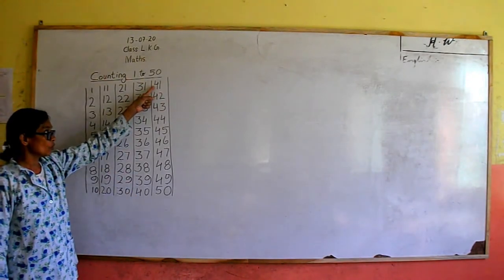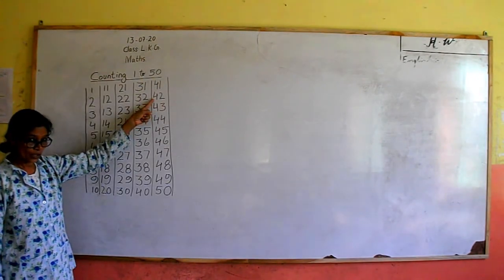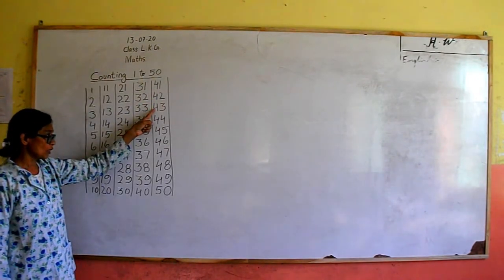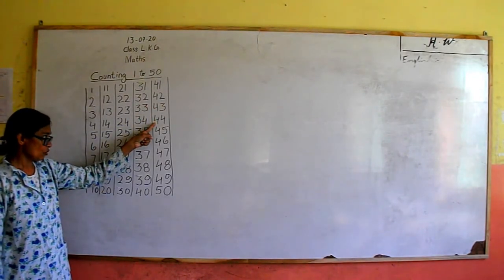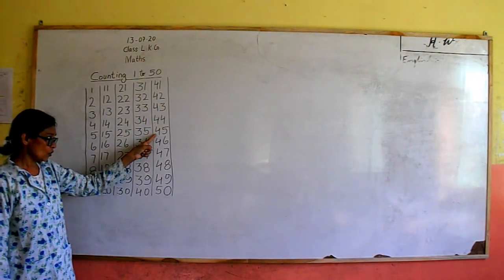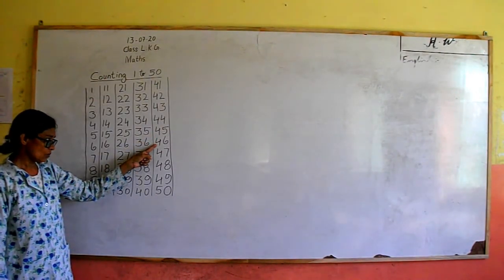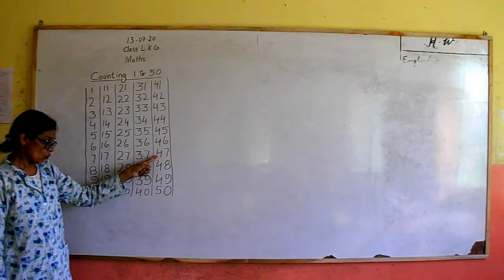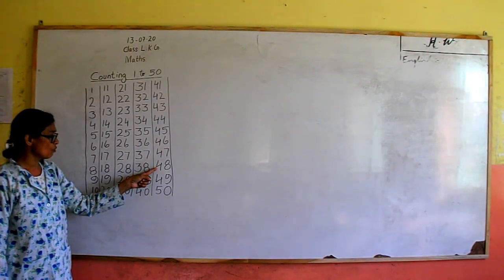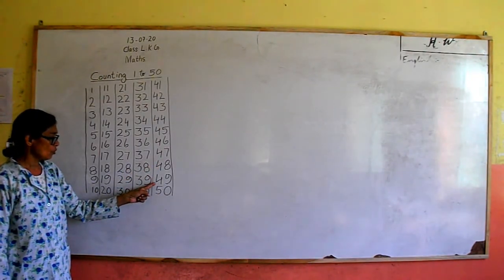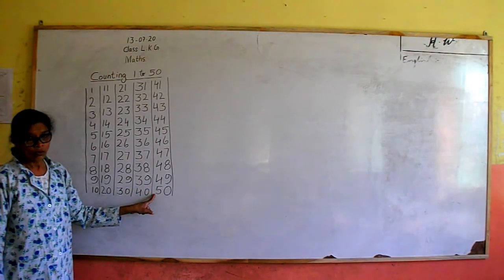Four, one — forty-one. Four, two — forty-two. Four, three — forty-three. Four, four — forty-four. Four, five — forty-five. Four, six — forty-six. Four, seven — forty-seven. Four, eight — forty-eight. Four, nine — forty-nine. Five, zero — fifty.